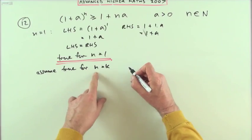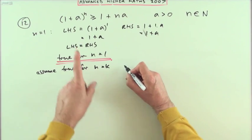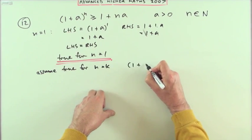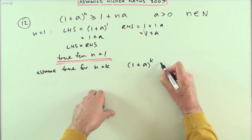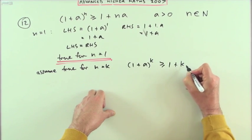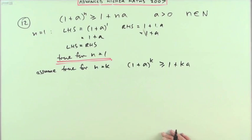Assume it's true for n equals k, and we put down this inductive hypothesis. It's a hypothesis, just knows an unproved statement. So what we got? n equals k means simply replace n with k, so I've got (1+a)^k is greater than 1+ka. There's my inductive hypothesis.